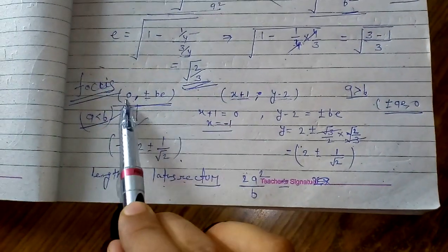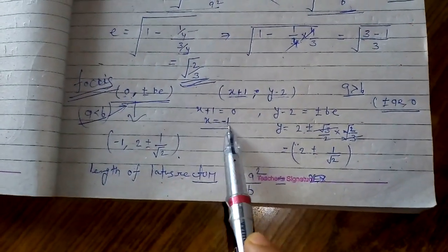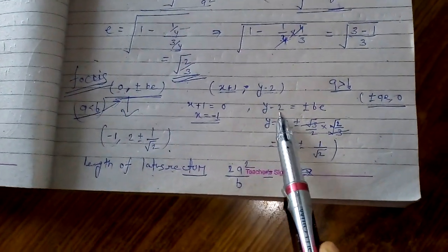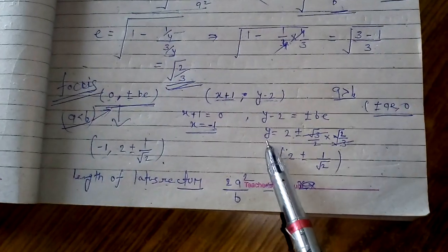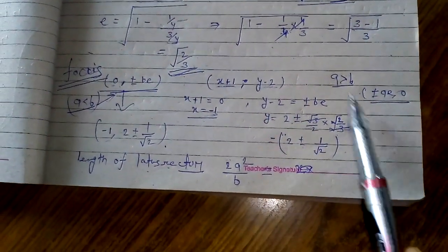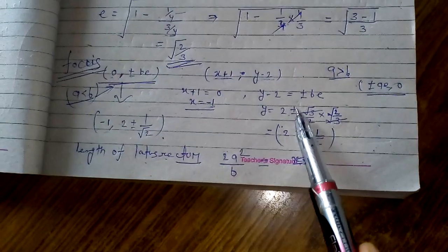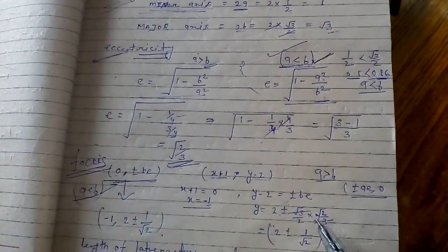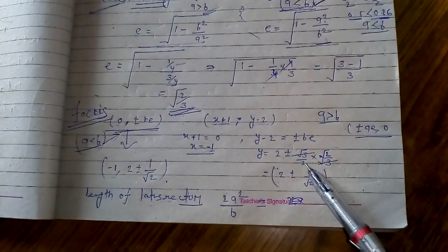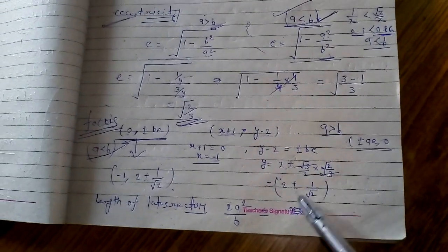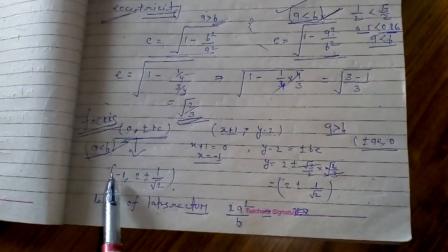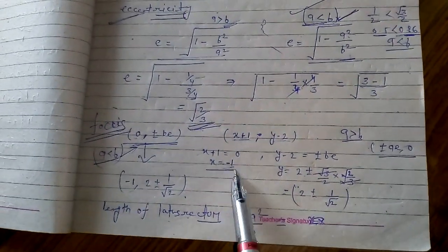We have center coordinates at x plus 1 and y minus 2. Equating x plus 1 equal to 0 gives x equal to minus 1. Then ±be equals y minus 2, so y minus 2 equals ±be, and transferring 2 to the other side gives y equal to 2 ± be. With b equal to root 3 by 2 and e equal to root 2 by 3, we substitute and simplify to get 2 ± 1 by root 2.